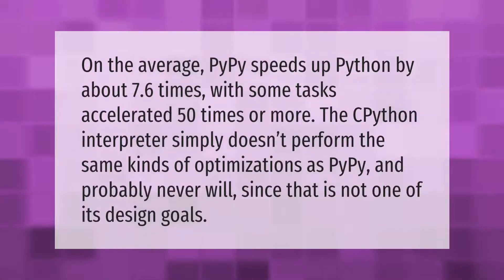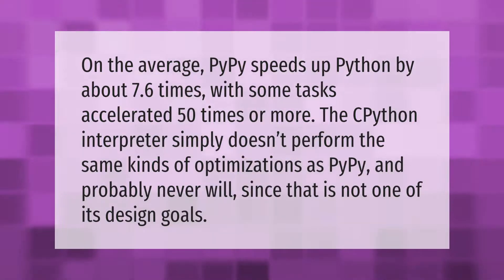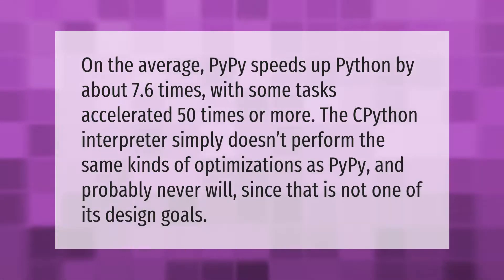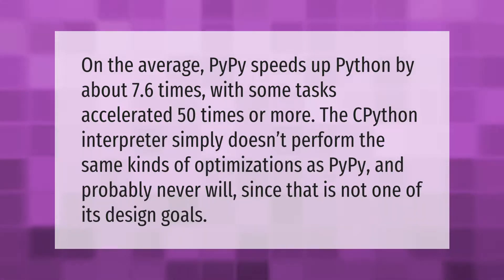On average, PyPy speeds up Python by about 7.6 times, with some tasks accelerated 50 times or more. The CPython interpreter simply doesn't perform the same kinds of optimizations as PyPy, and probably never will, since that is not one of its design goals.